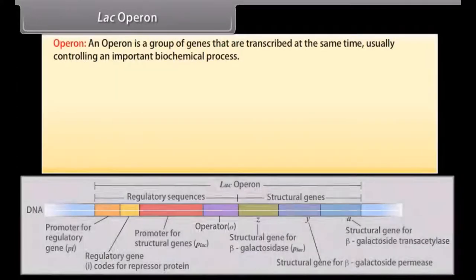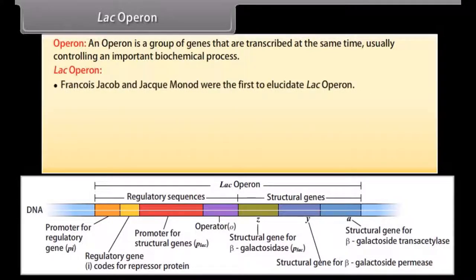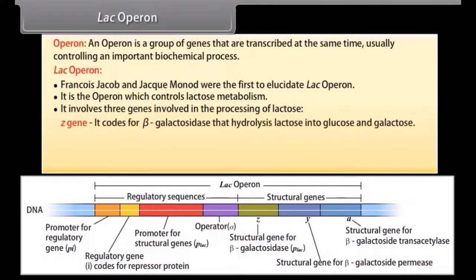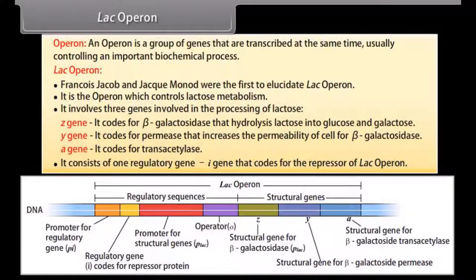An operon is a group of genes that are transcribed at the same time, usually controlling an important biochemical process. Francois Jacob and Jacques Monod were the first to elucidate the lac operon, which controls lactose metabolism. It involves three genes: the Z gene coding for beta-galactosidase that hydrolyzes lactose into glucose and galactose; the Y gene coding for permease that increases cell permeability; and the A gene coding for transacetylase. It also consists of one regulatory I gene that codes for the repressor of the lac operon.